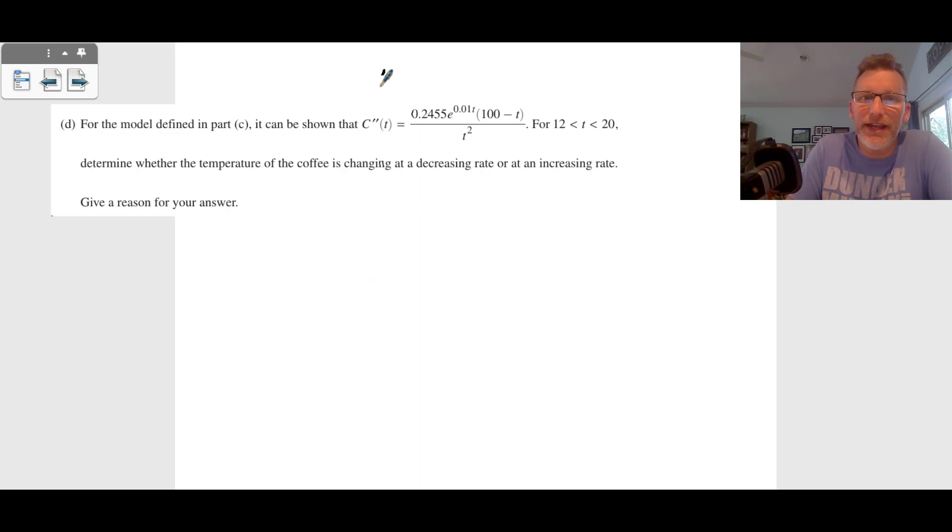And last but not least, they give us a second derivative function here of that first derivative back in part C. And they want to know, is the temperature of the coffee changing at a decreasing rate or an increasing rate? And we want to give a reason. So we're going to do C prime prime of T. And we know C prime prime of T is greater than zero, or it's positive for all temperatures. You can graph this out for all times between 12 and time equals 20 minutes.